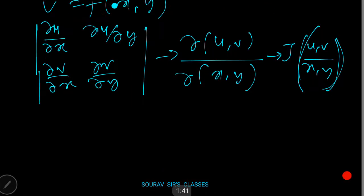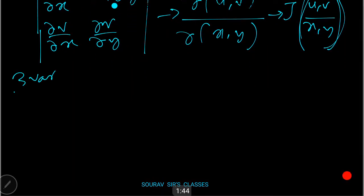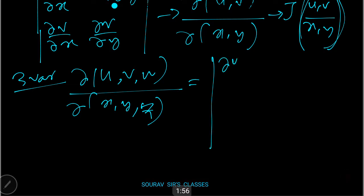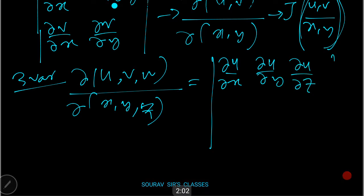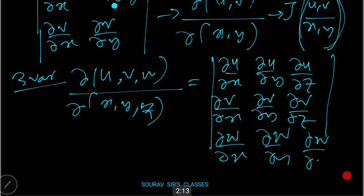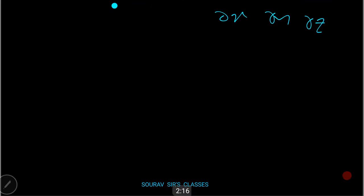Now, what happens in a three-variable structure? In a three-variable structure, it is ∂(u,v,w)/∂(x,y,z). In that case there will be a 3×3 formation: ∂u/∂x, ∂u/∂y, ∂u/∂z; similarly ∂v/∂x, ∂v/∂y, ∂v/∂z; and likewise for ∂w. So now you know the basic formation of the Jacobian structure.